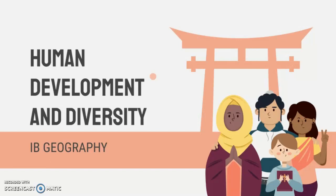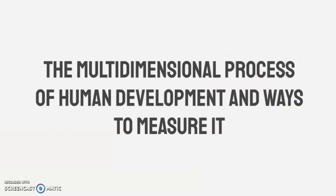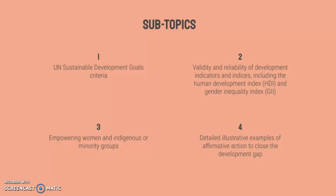This video covers human development and diversity in IB Geography. The syllabus point is the multi-dimensional process of human development and ways to measure it. The subtopics are UN SDGs, criteria, validity and reliability of development indicators and indices, empowering women and indigenous or minority groups, and detailed illustrative examples of affirmative action to close the development gap.